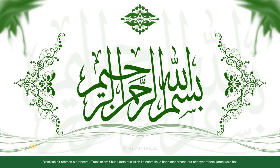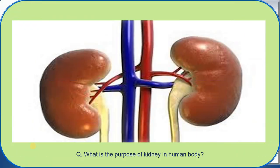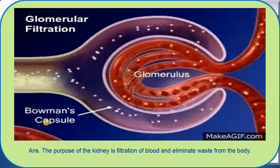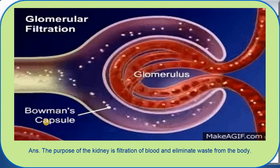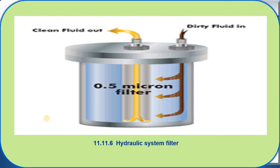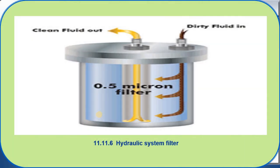Bismillahir Rahmanir Raheem. Student, what is the purpose of the kidney in the human body? The purpose of the kidney is filtration of blood and elimination of waste from the body. The kidney filters the blood and separates the waste. Same like that, in the hydraulic system there is a component named filter which filters the hydraulic fluid and separates the impurity. Today our topic is hydraulic system filter, and this is the picture of a hydraulic system filter.